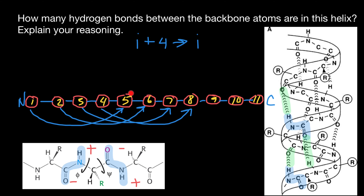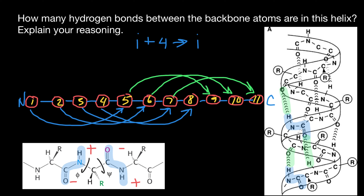Now take a look at what happens next. Amino acid number five, which is in the middle, makes another hydrogen bond with the amino acid four positions downstream. So: five bonds with nine, six bonds with ten, and seven bonds with eleven. A polypeptide chain of 11 amino acids is going to have the following number of hydrogen bonds: one, two, three, four, five, six, seven.